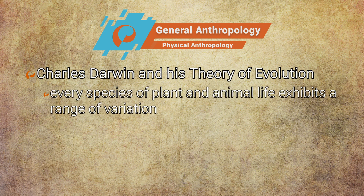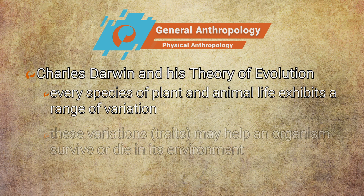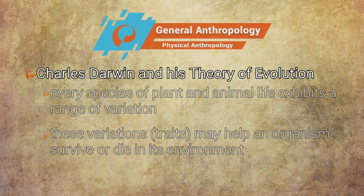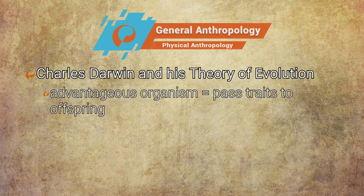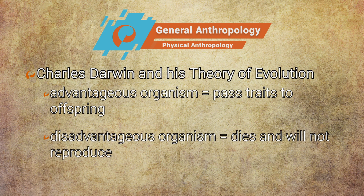Simply, Darwin argued that every species of plant life and animal life exhibits a range of variation. These variations may help an organism survive or die in its environment. If a variation — also referred to as a trait — is considered advantageous, the organism possessing it will survive to reproduce and pass those traits to offspring. If the variation is considered disadvantageous, the organism dies and will not reproduce.